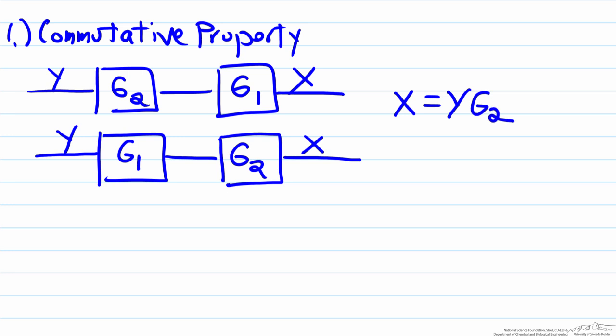Moving to the next block, you multiply yg2, which is the stream represented here, by g1, so x equals yg2g1. Similarly, for the second diagram, x equals y, the input variable, multiplied by g1g2. These are the two answers for the respective block diagrams, but an important point is that these are both equal to each other.